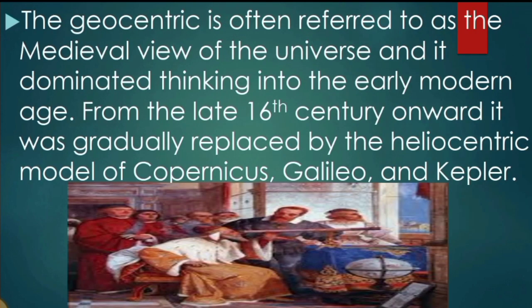The geocentric model is often referred to as the medieval view of the universe, and it dominated thinking into the early modern age. From the late 16th century onward, it was gradually replaced by the heliocentric model of Copernicus, Galileo, and Kepler.